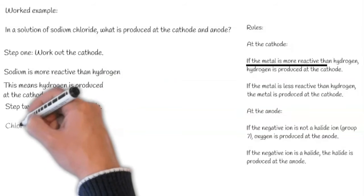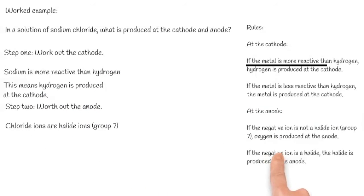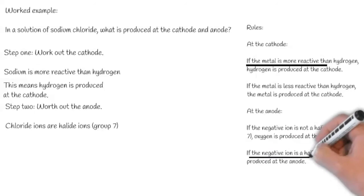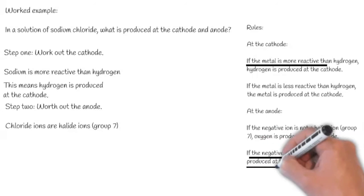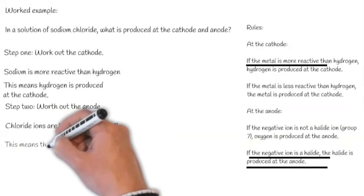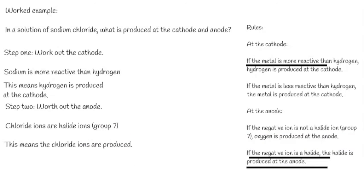In step two, we work out the anode. Chloride ions are halide ions. They're in group seven. Remember, if the negative ion is a halide, the halide ion is produced at the anode. This means the chloride ions are produced because they're halide ions.